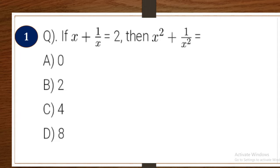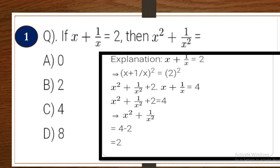First one: if x plus 1 by x is equal to 2, then x squared plus 1 by x squared is equal to — option A: 0, option B: 2, option C: 4, option D: 8. Explanation: squaring both sides using the (a + b)² formula gives 4 minus 2, which is equal to 2. So the correct answer is B.